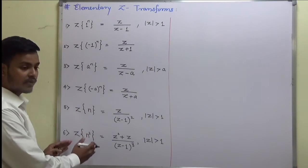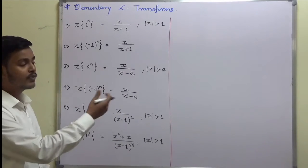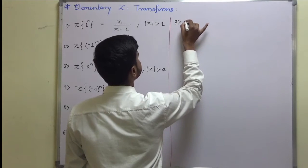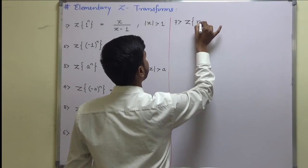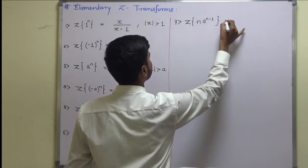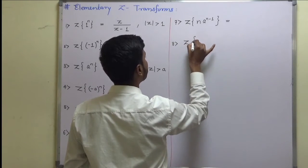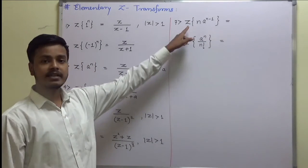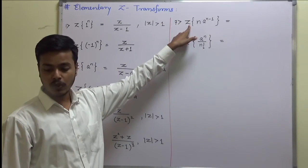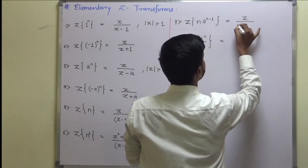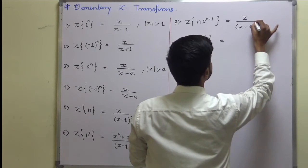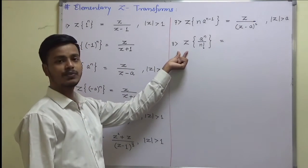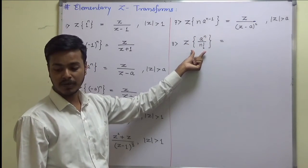If this set of Z transforms is clear, we can move ahead. The next is Z transform of n·a^(n-1), and after that Z transform of a^n/n!. The Z transform of n·a^(n-1) is z/(z-a)². The Z transform of a^n/n! is e^(a/z).